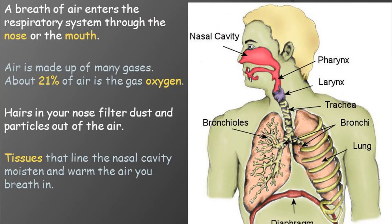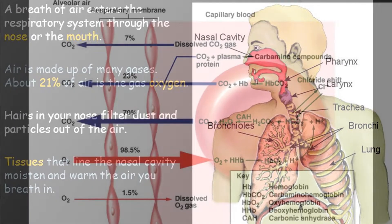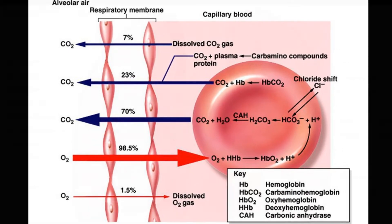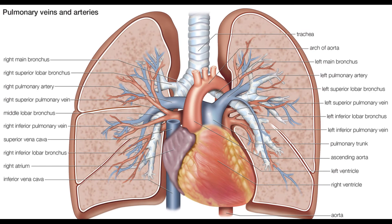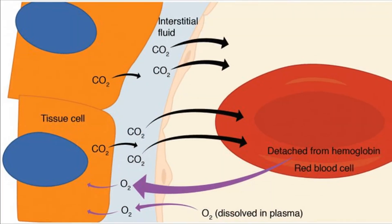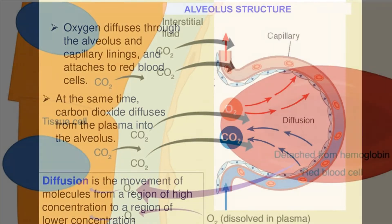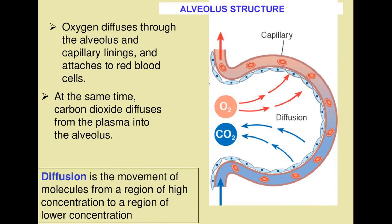Breathing. On reaching the alveoli, the oxygen diffuses out into the blood capillaries formed by branching of the pulmonary artery. At the same time, carbon dioxide from the blood diffuses into the alveoli. The low concentration of oxygen in the capillaries and the high concentration of carbon dioxide in the inspired air accounts for this gaseous exchange.